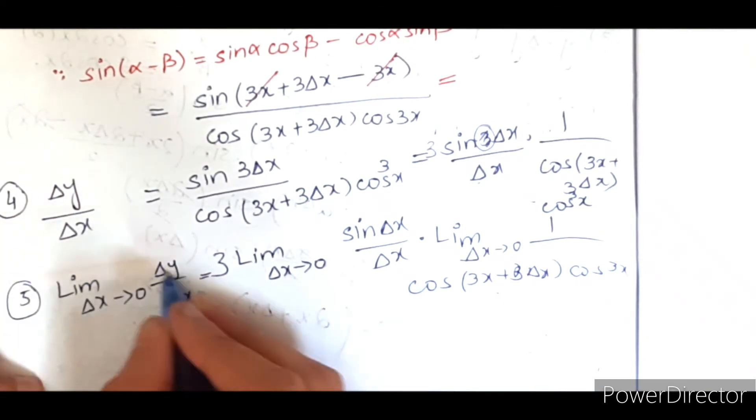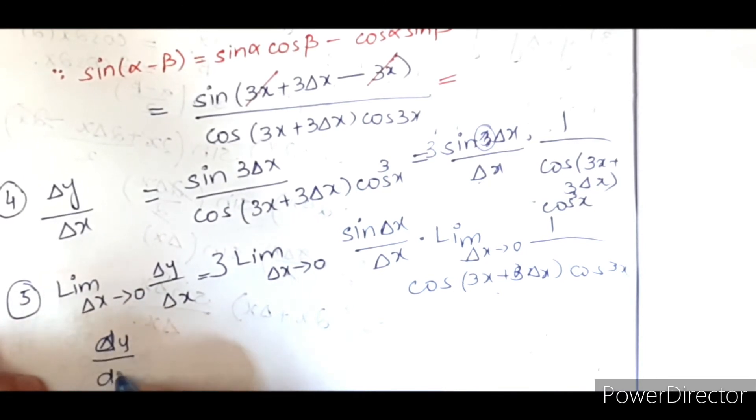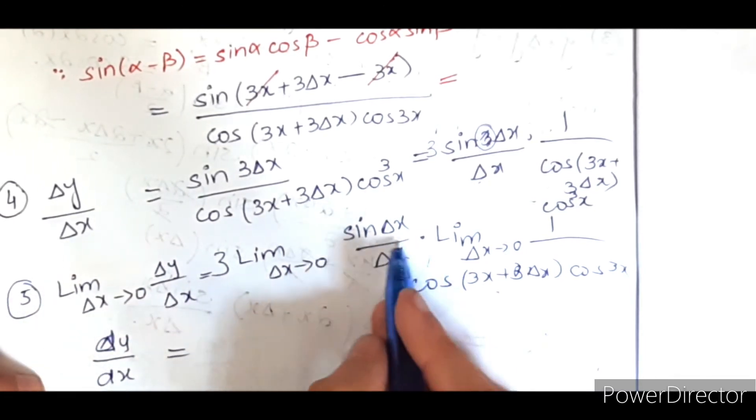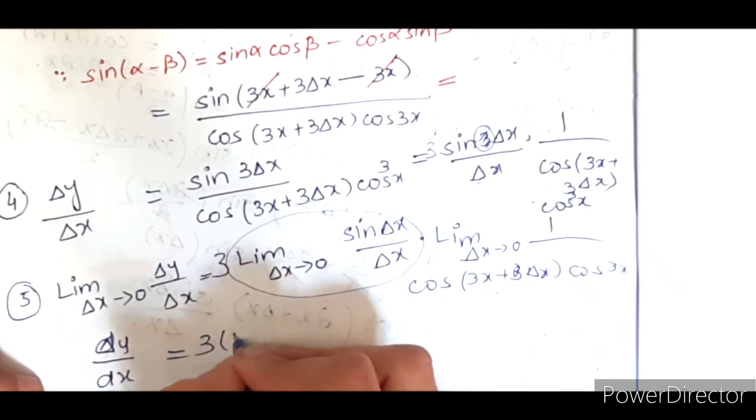So it will be equal to dy over dx, the first derivative. And this whole term will be equal to 1 according to the sandwich theorem.